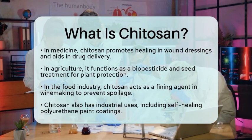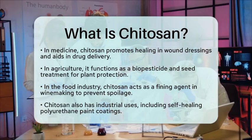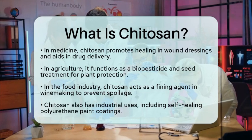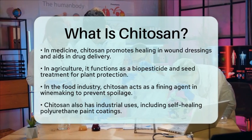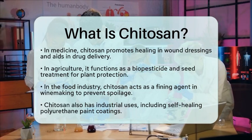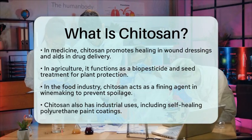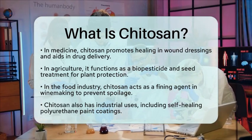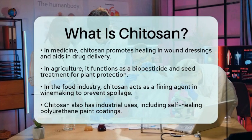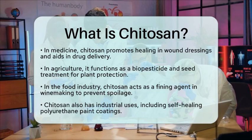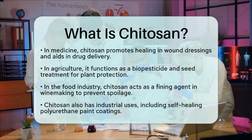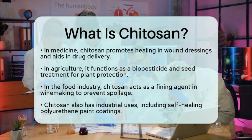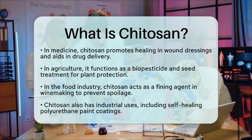Additionally, it finds applications in industrial settings, such as in self-healing polyurethane paint coatings. Chitosan is a versatile natural polymer derived from chitin. Its unique chemical structure allows for various modifications and applications across medicine, agriculture, food, and industry. Understanding chitosan not only highlights the importance of natural polymers in chemistry education, but also showcases the diverse ways they can be applied in real-world scenarios.